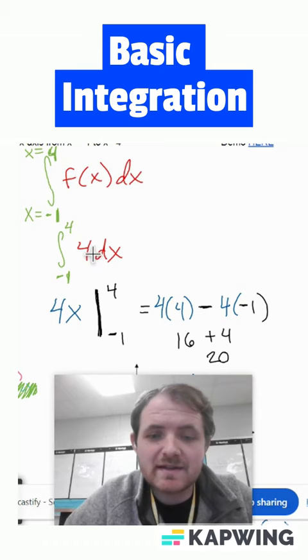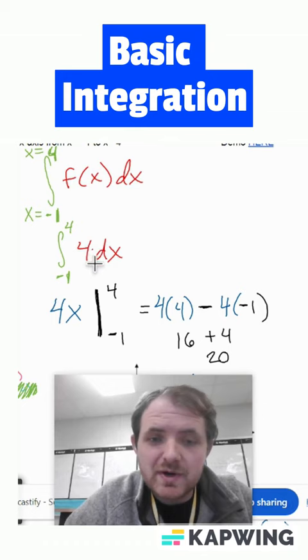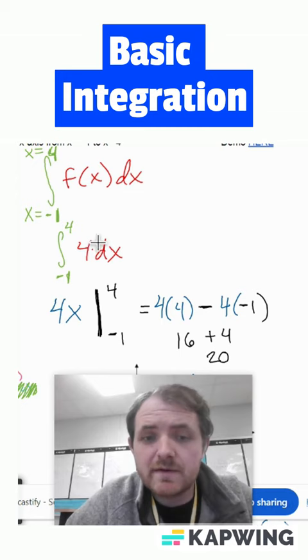And so when you have that, you have to ask yourself, the derivative of what is 4? So the derivative of 4x is 4, so that's called the anti-derivative of 4.